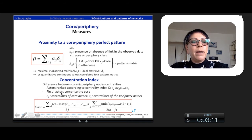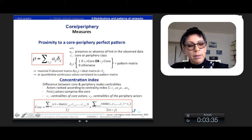So we have Ci is the centralities of the core actors. Ck is the centralities of the periphery actors. And so the concentration index is the difference between all the centralities of the core and the maximal centrality in the periphery. And we add the difference between the minimal centrality of the core and all the centralities of the periphery.